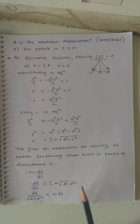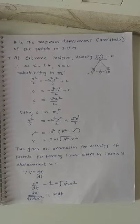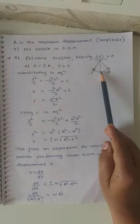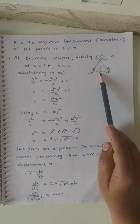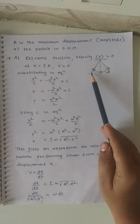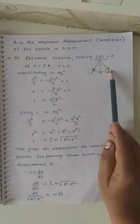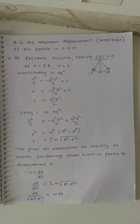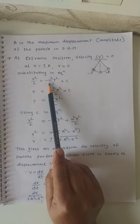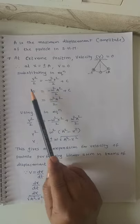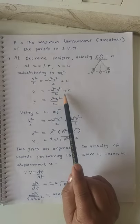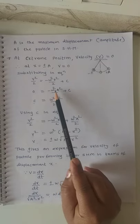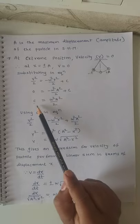Now, let A be the maximum displacement — that is, the amplitude of the particle in SHM. At the extreme position, velocity v = 0 and displacement x = ±A. We have a particle like a bob attached to a string performing oscillations between −A and +A, with the mean position at the centre. Substituting v = 0 and x = A into v²/2 = −ω²x²/2 + C, we get 0 = −ω²A²/2 + C, therefore C = ω²A²/2.